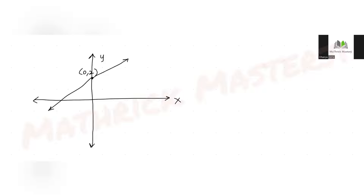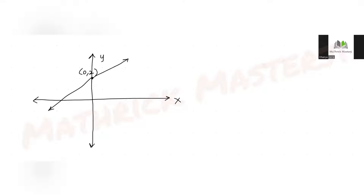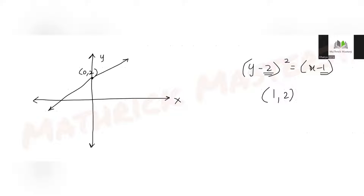We've also been given the parabolic equation (y - 2)² = x - 1. This is not the standard form y² = 4ax; it has a shifted vertex. The form (y - 2)² = (x - 1) tells us the origin has shifted, so the vertex of this parabola is at (1, 2).